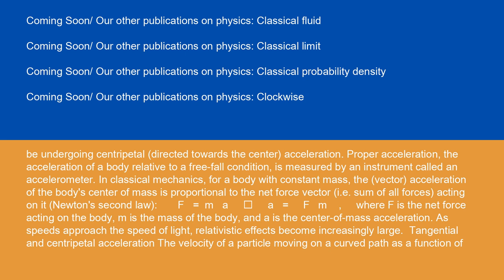In classical mechanics, for a body with constant mass, the vector acceleration of the body's center of mass is proportional to the net force vector — i.e., the sum of all forces acting on it — by Newton's second law: F = ma, or a = F/m, where F is the net force acting on the body, m is the mass of the body, and a is the center of mass acceleration. As speeds approach the speed of light, relativistic effects become increasingly large.